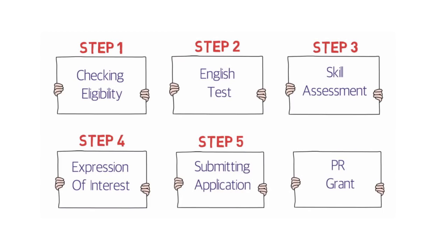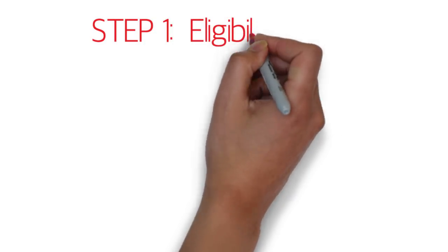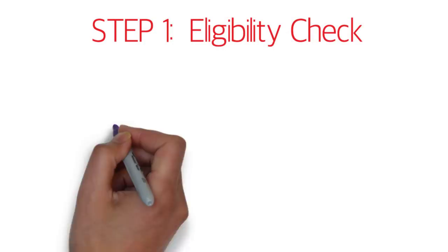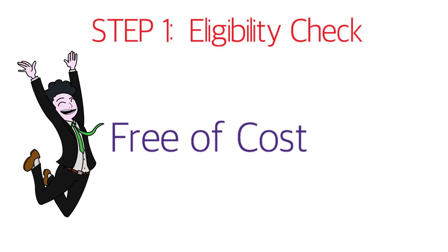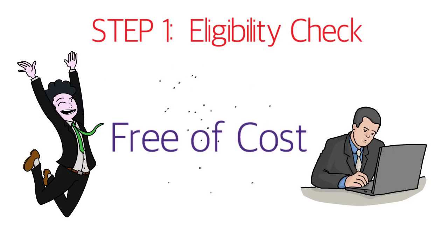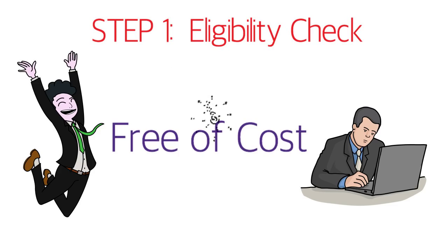Now let's talk about the cost at each step. Step one, the eligibility check, is free of cost. You can go online and check if you're actually eligible or what chances you have of getting Australian PR. I made a separate video for it and I'll provide the link in the description box below.